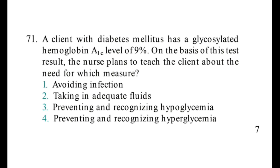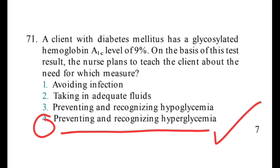Next: A client with diabetes mellitus has a glycated hemoglobin (HbA1c) level of 9. According to this high level, what will you teach the patient? Options: 1. Avoiding infection, 2. Taking adequate fluid, 3. Prevention and recognition of hypoglycemia, 4. Prevention and recognition of hyperglycemia. The right answer is 4 — prevention and recognition of hyperglycemia, because the HbA1c level of 9 is high.